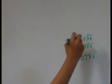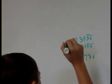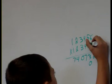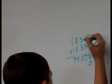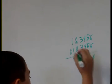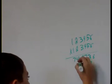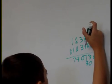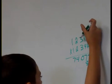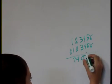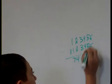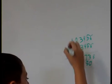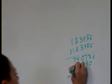And then, 5 times 6, which is 30. And then, you multiply that. And then, 5 times 5 is 25, plus the 3 is 28. And then 8. And then, 5 times 4 is 20, plus the 2 is 22. And then, 5 times 3 is 15, plus the 2 is 17.